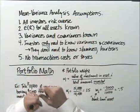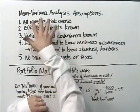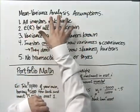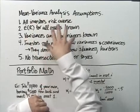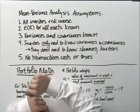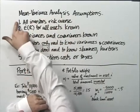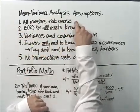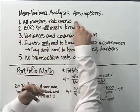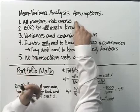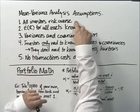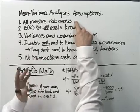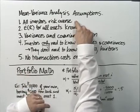There are five important assumptions behind mean variance analysis. First, all investors are risk-averse, and that's very important. This is one of those understandings from basic economics that drives mean variance analysis.